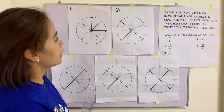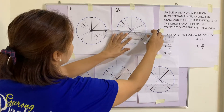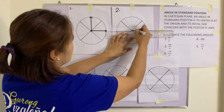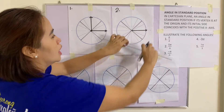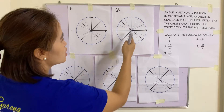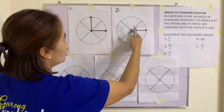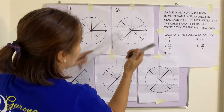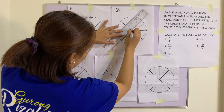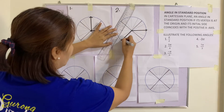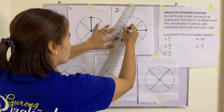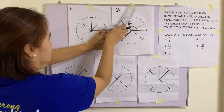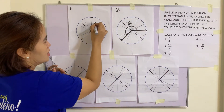Number two: we have 5π/4. The initial side is the positive x-axis. Counting: π/4, 2π/4, 3π/4, 4π/4, 5π/4 — this is a counterclockwise rotation. This angle theta is 5π/4.